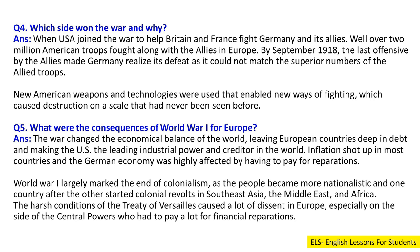Question 4: Which side won the war and why? Answer: When the USA joined the war to help Britain and France fight Germany and its allies, well over 2 million American troops fought along with the Allies in Europe. By September 1918, the last offensive by the Allies made Germany realise its defeat as it could not match the superior numbers of the Allied troops. New American weapons and technologies were used that enabled new ways of fighting, which caused destruction on a scale never seen before.